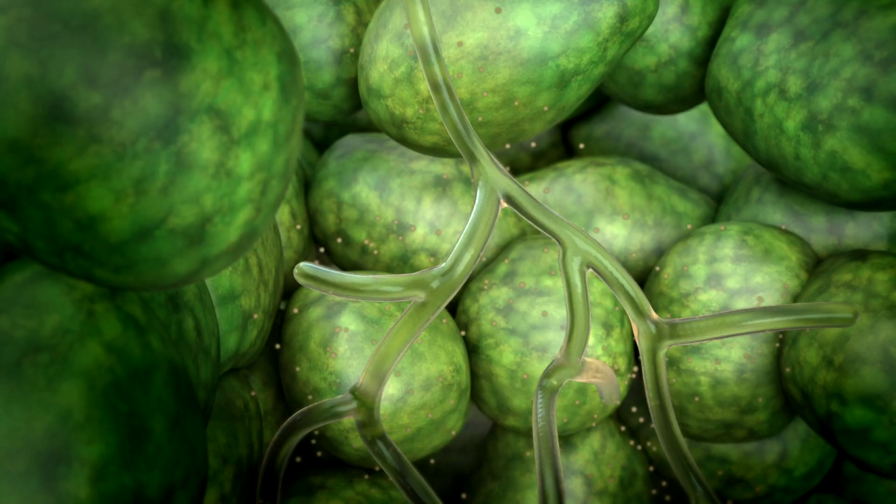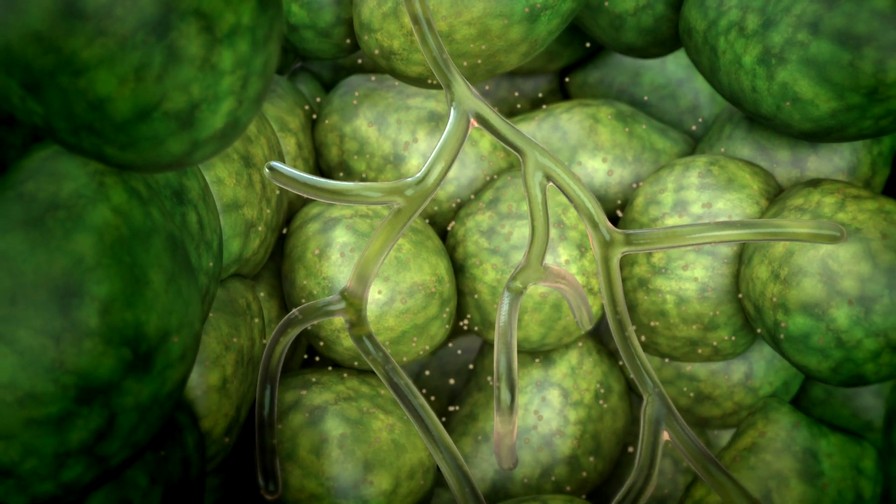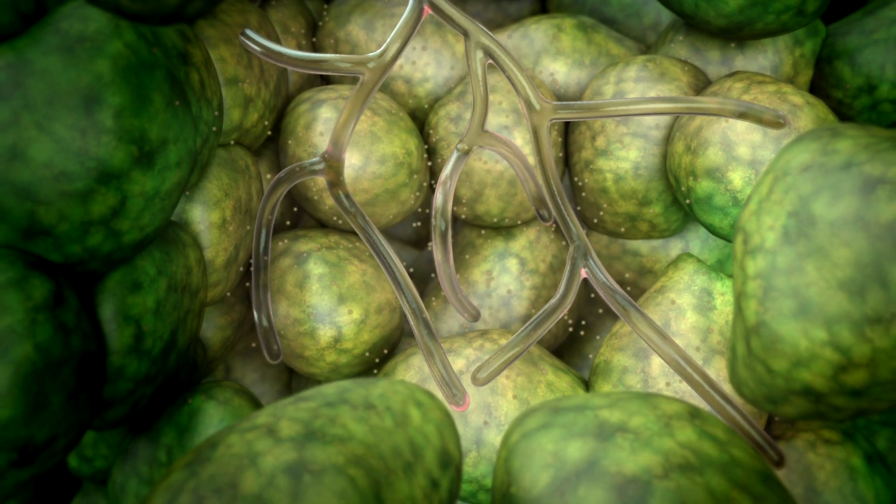Inside the leaf, Septoria starts to grow and kills the neighboring plant cells with its metabolic products. This creates the typical yellowish region on the wheat leaves.